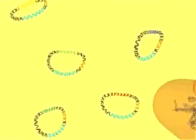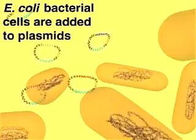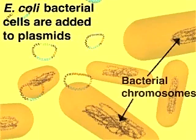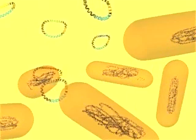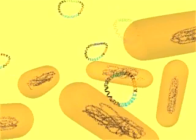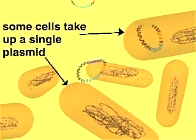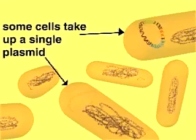Next, the host cells, E. coli bacteria, are added to the recombinant plasmids. The cells have been treated with calcium chloride to make them permeable to DNA molecules. Through a process called transformation, a few cells take up a recombinant plasmid, while most other cells do not.